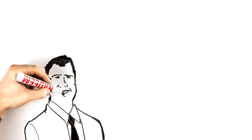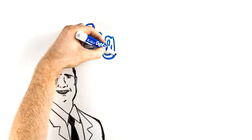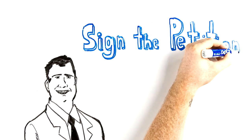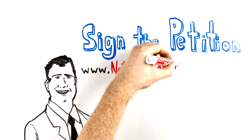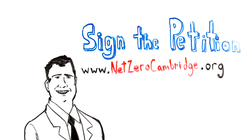The Net Zero Plan was filed as a citizen zoning amendment by Cambridge Attorney Mike Connolly, and it's now pending before the City Council and the Planning Board. Visit www.netzerocambridge.org to sign the petition and learn more.